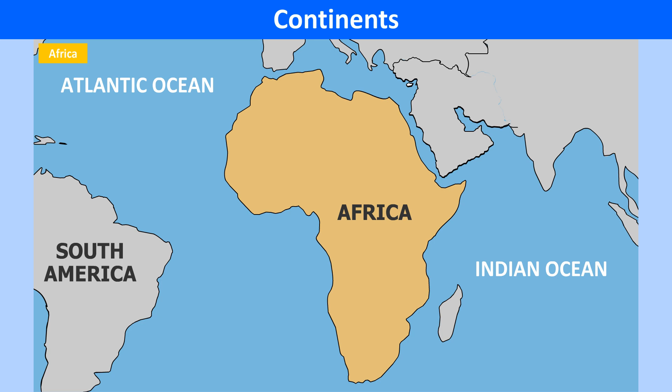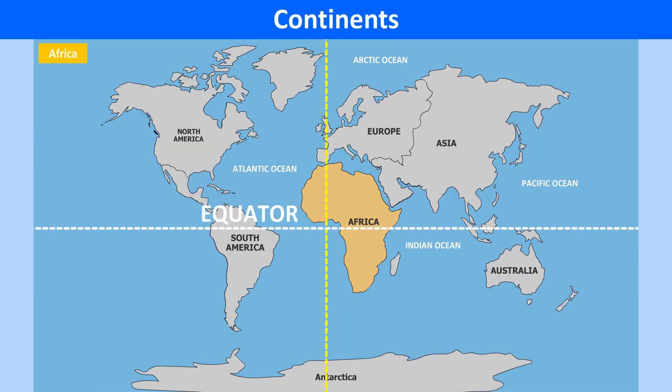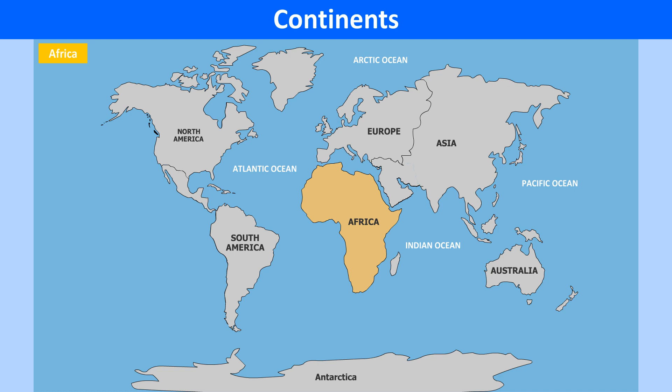It has the world's largest hot desert, the Sahara Desert. The equator or zero-degree latitude runs almost through the middle of the continent. A large part of the continent lies in the northern hemisphere.